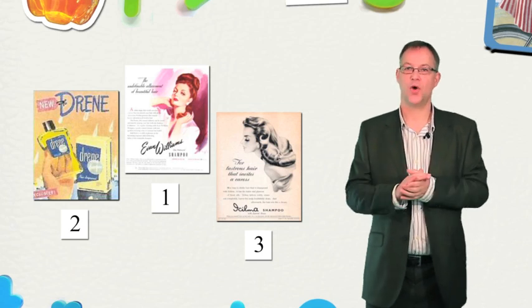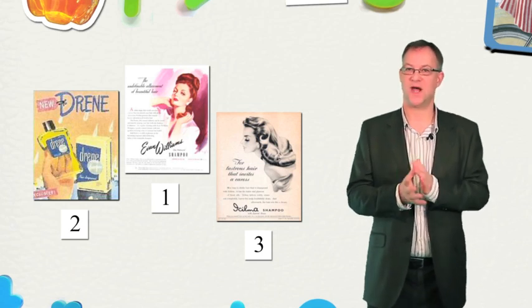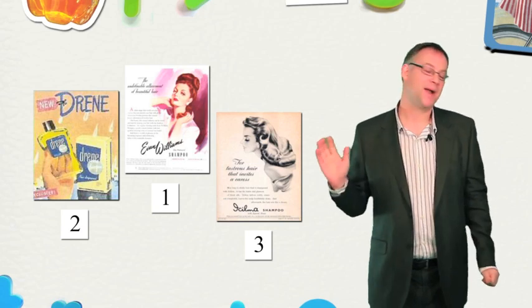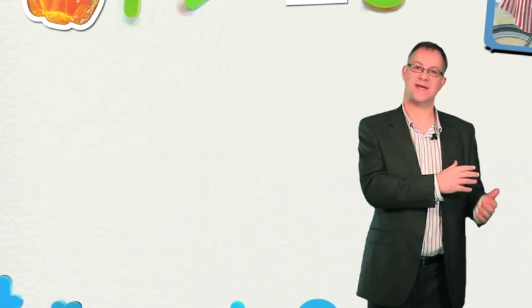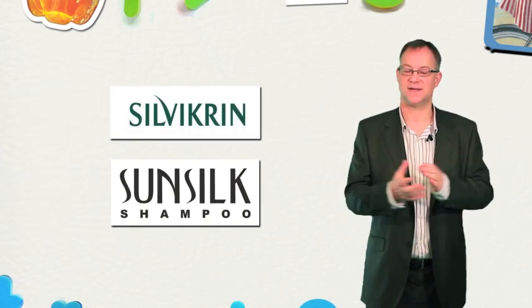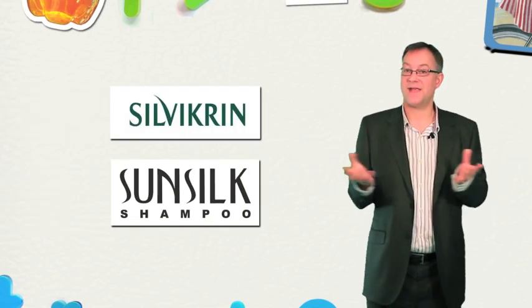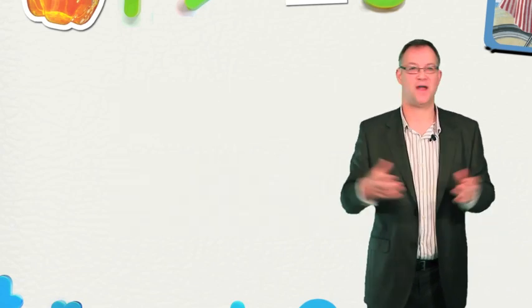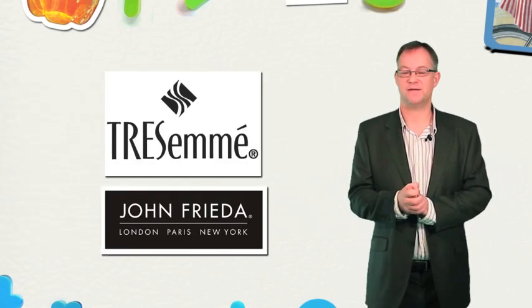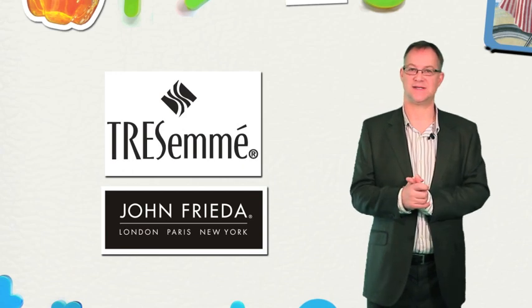In fact, the truth is, all the big shampoo brands of 1949 have completely disappeared by 1979. They were replaced with brands like Silvikrin and Sunsilk in the 1970s. And yet these brands have now in turn been swept away by Tresemme and John Frieda and the like that we see in our supermarkets now.